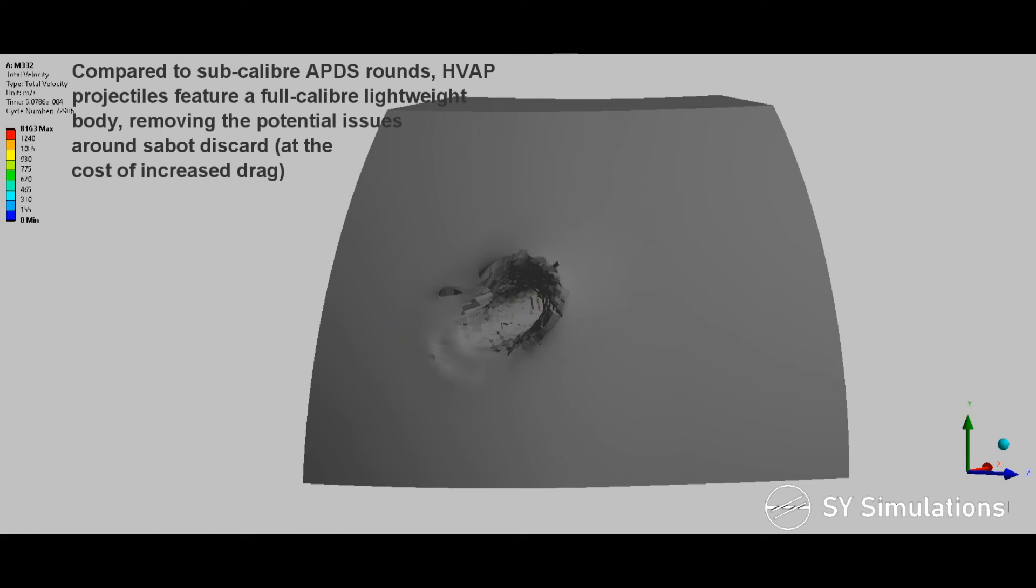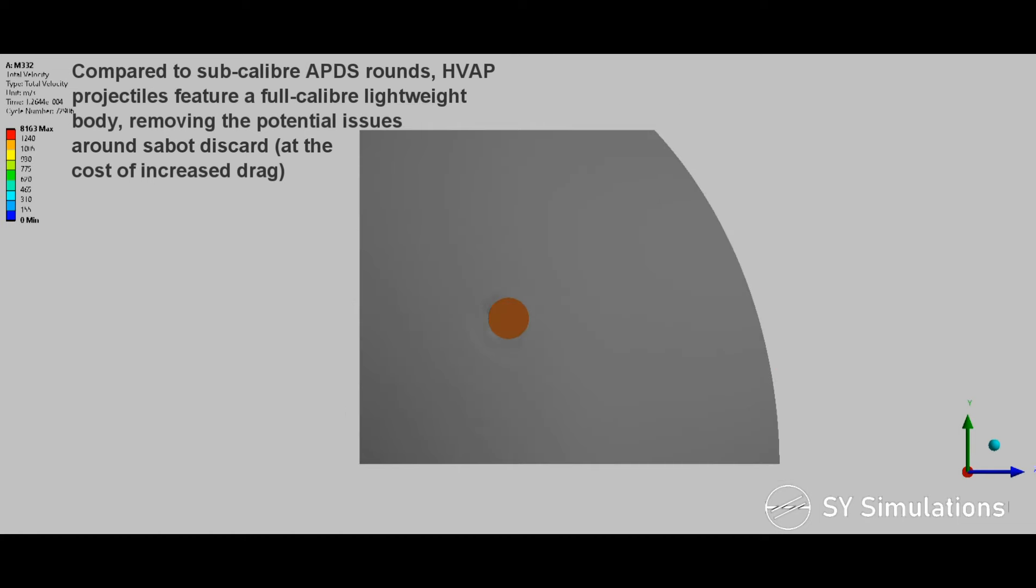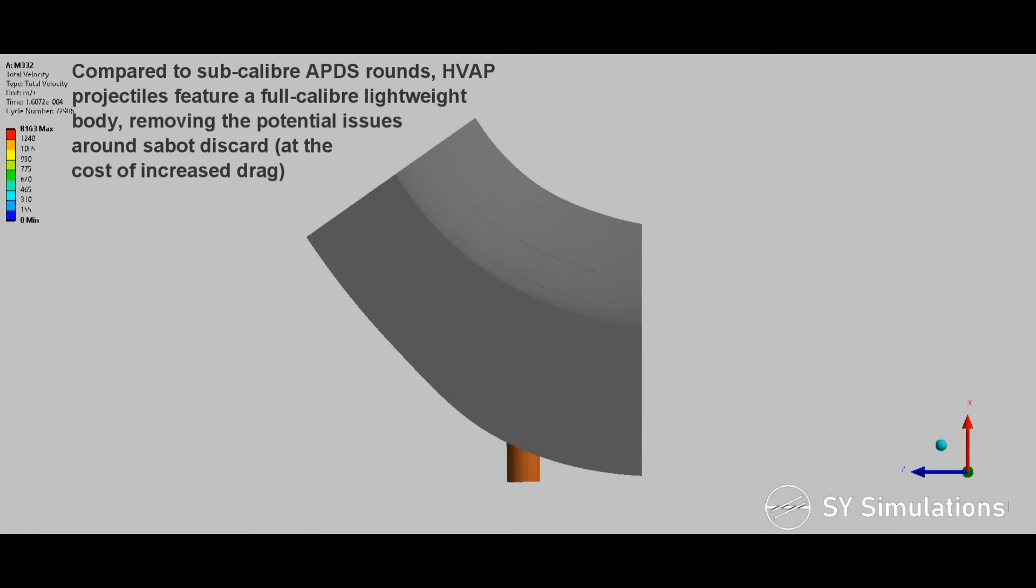Compared to sub-caliber armor-piercing discarding sabot rounds, HVAP projectiles feature a full-caliber lightweight body, removing the potential issues around sabot discard at the cost of increased drag.